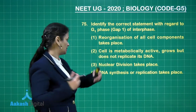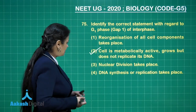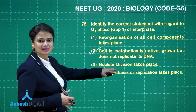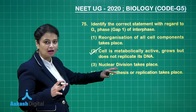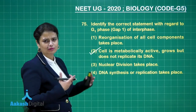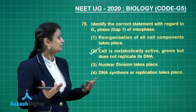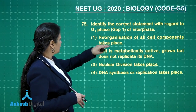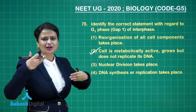Looking at the other options: nuclear division, which is karyokinesis, occurs during M phase — not G1. DNA synthesis also occurs during S phase, as already discussed. Reorganization of all cell components also takes place during M phase. So those options are eliminated.